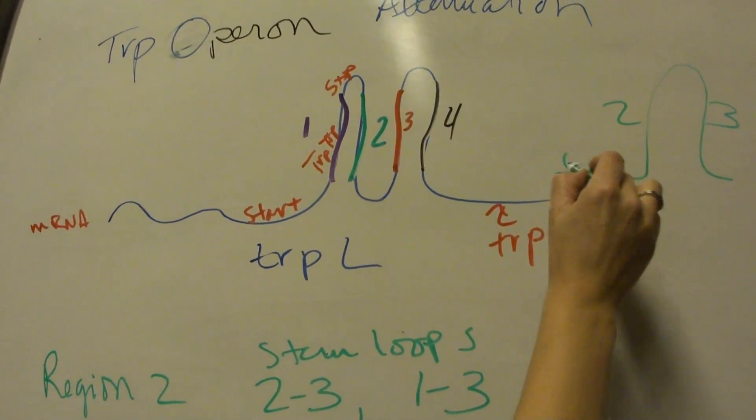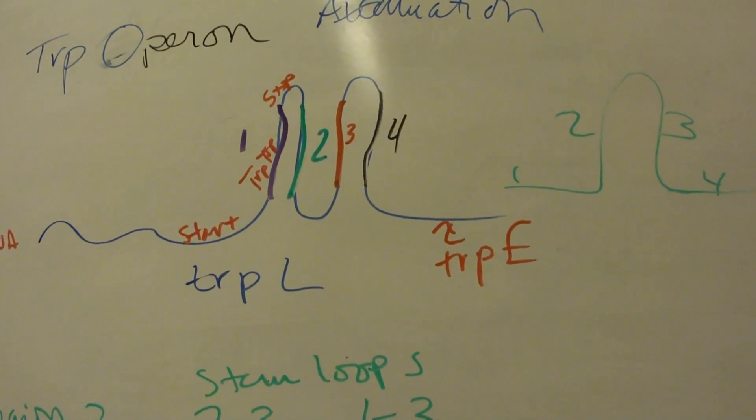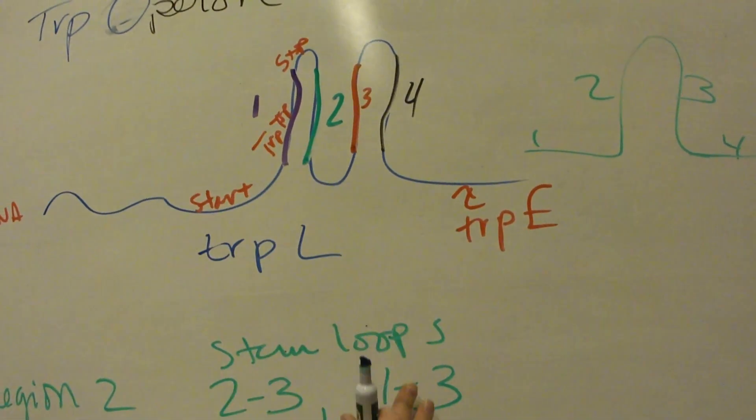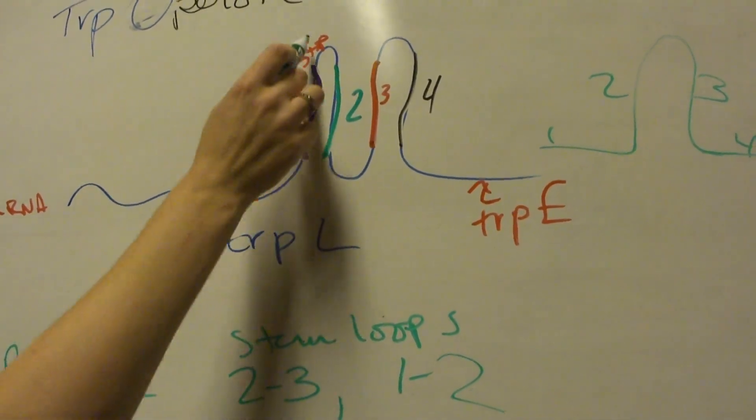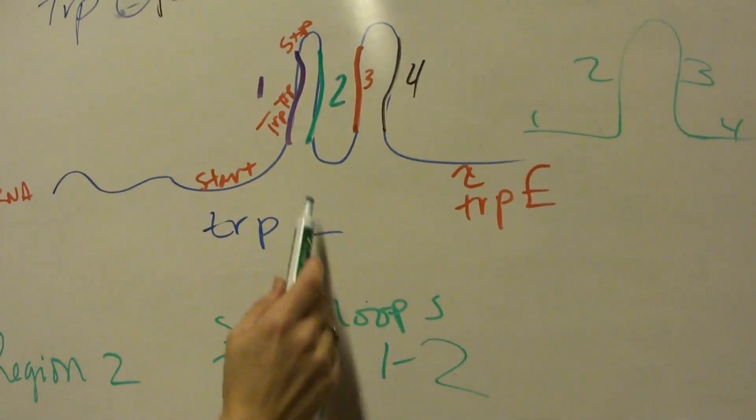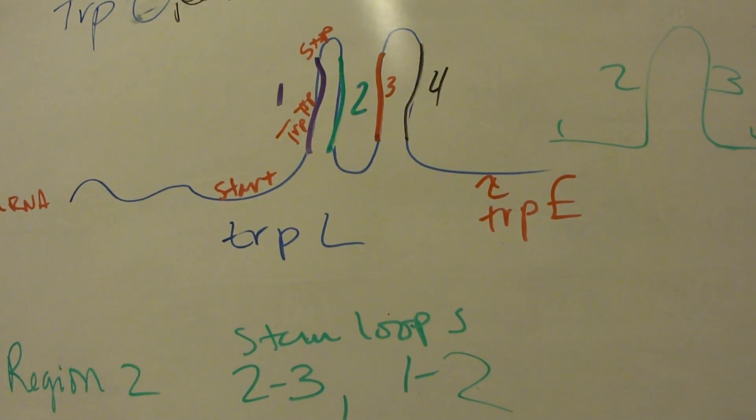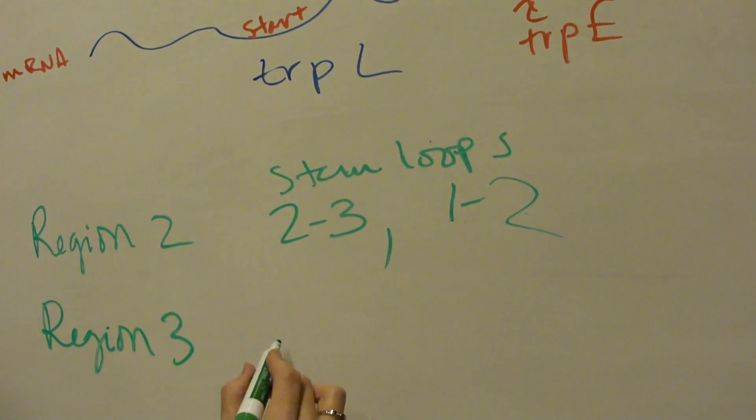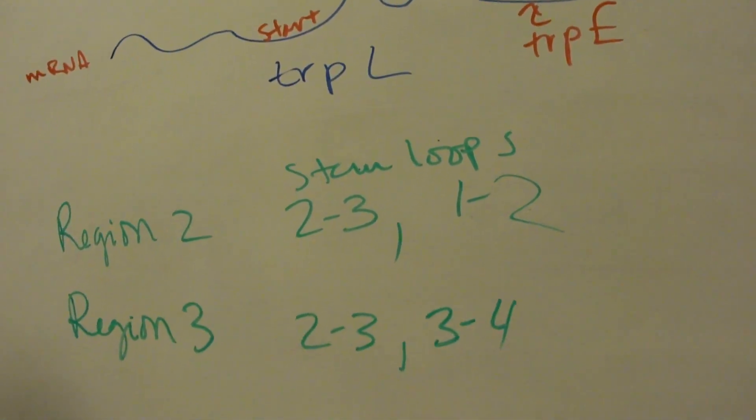They'd be a region here, so the 2-3 stem loop would look like this, or region 1 and region 4 will be flattened out beside it. Or you can get 1-2, so if 1-2 form, then that also allows 3 and 4 to form.